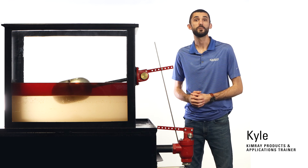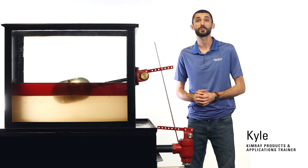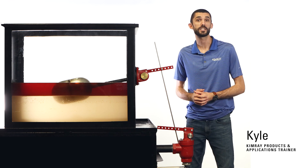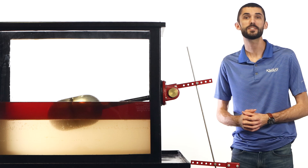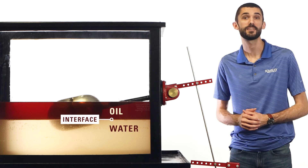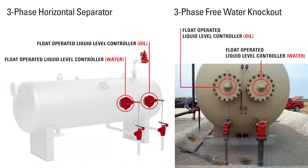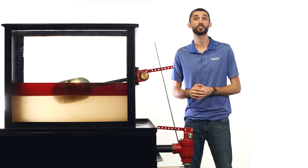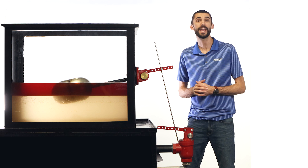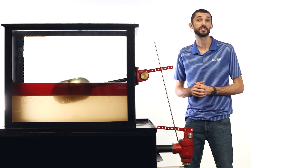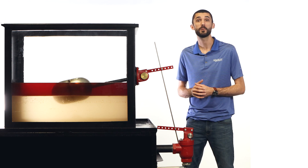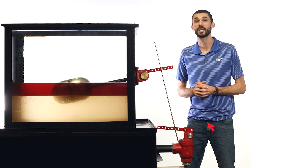Liquid level control is vital for proper separation for upstream oil and gas production. Interface is the point where oil and water meet. In a three-phase separator, liquid level controls allow oil and water to fill or dump from the vessel as required for each fluid individually. In this video we'll show you two adjustments for maintaining accurate interface level, and we'll also talk about product design which impacts accuracy.